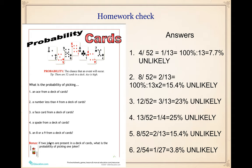And the last question — bonus question: if two jokers are present in a deck of cards, what is the probability of picking one joker? Now we have two jokers, and instead of having fifty-two cards we have fifty-four. So we write two over fifty-four, which should be one over twenty-seven, or three point eight percent — which is very low. Now this is the homework from last time. Please check it; if you need more time, pause this lesson.